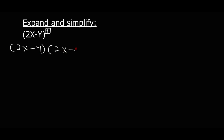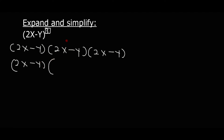Now a question: expand and simplify (2x minus y) to the exponent 3. Remember this exponent — so (2x minus y)³ means simplifying that expression. We focus on the brackets squared first, because we can multiply two brackets at a time, so we focus on two brackets first.